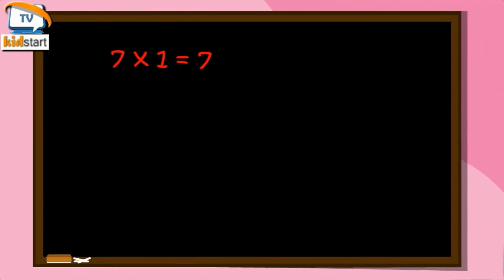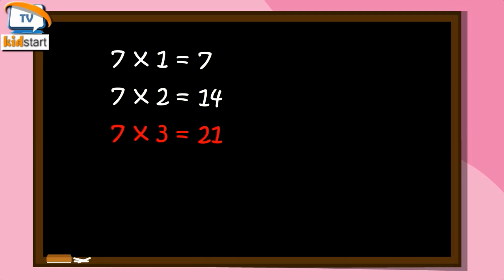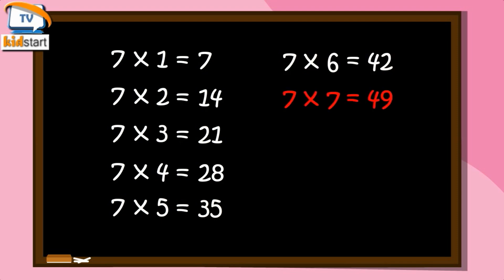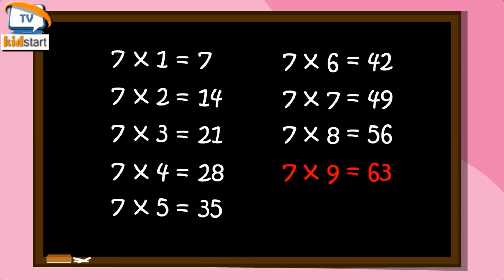Seven ones are seven. Seven twos are fourteen. Seven threes are twenty-one. Seven fours are twenty-eight. Seven fives are thirty-five. Seven sixes are forty-two. Seven sevens are forty-nine. Seven eights are fifty-six. Seven nines are sixty-three. Seven tens are seventy.